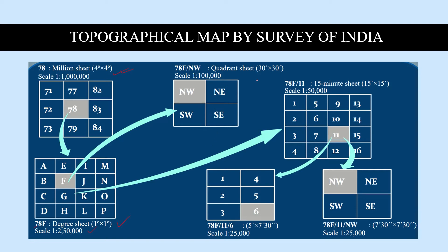When we further divide the 1 degree by 1 degree block into 4 parts — northwest, northeast, southeast, southwest — the degree value becomes 30 minutes by 30 minutes and the scale value is 1:1,000,000. Alternatively, if we divide the F block into 16 parts, the degree value becomes 15 minutes by 15 minutes and the scale value is 1:50,000. The topo sheet number in that case would be written as 78F/NW for the northwest quadrant.